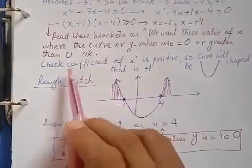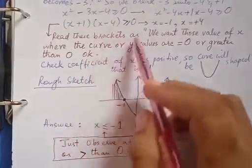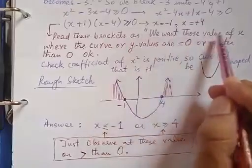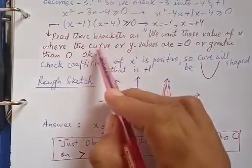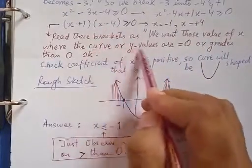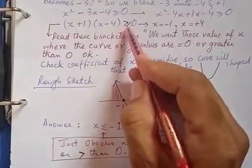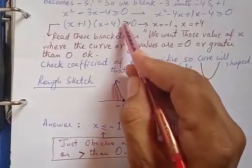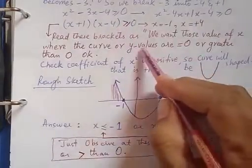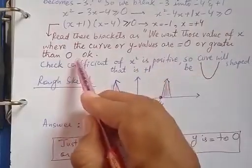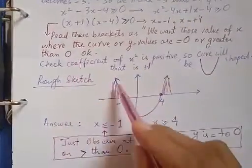We read these brackets as: we want those values of x where the curve or y-values are equal to zero, because we have both an equality sign as well as greater than. So y-values are equal to zero or greater than zero. First, just sketch this curve.